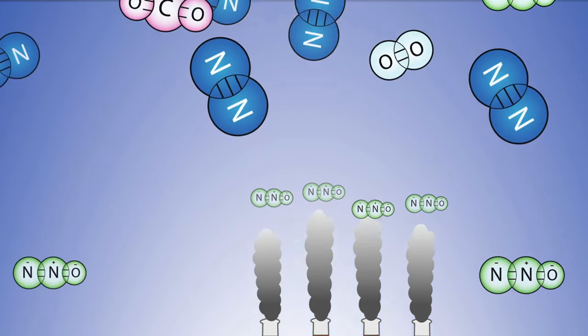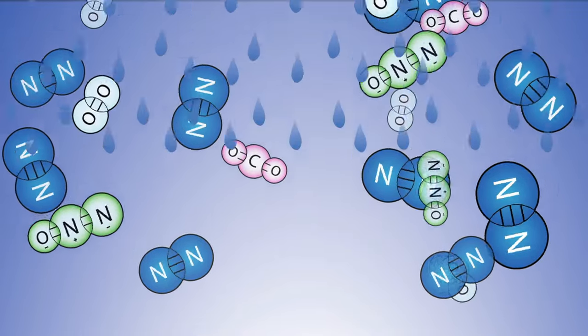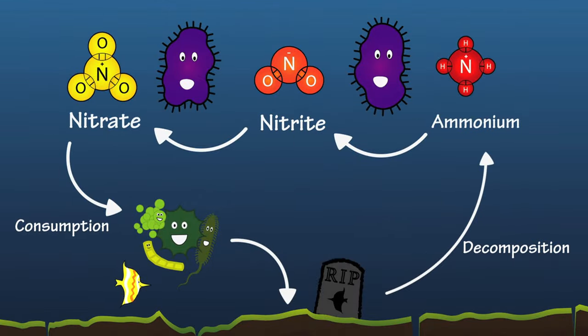The more nitrogen that gets released into the atmosphere means more gets washed down in rainstorms and overwhelms the balance of the nitrogen cycle.